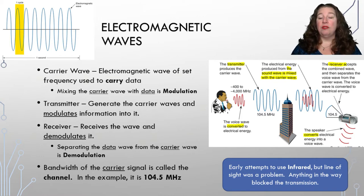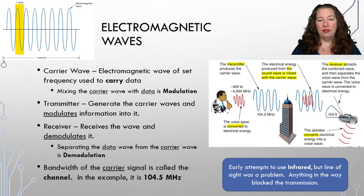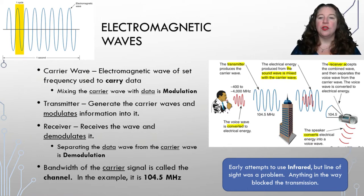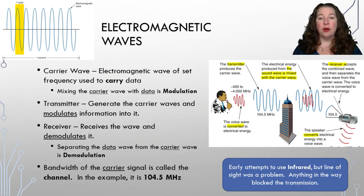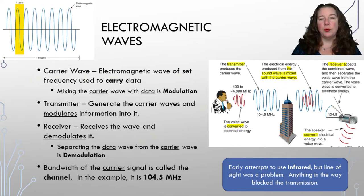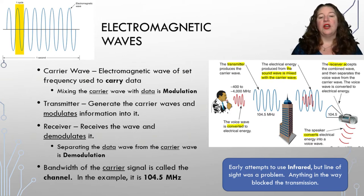Whether it's radio, television, or data, all three essentially use the same concept. We have to have a transmitter and a receiver. The transmitter generates the carrier wave by modulating the information into it, sends it out, and it's received by a receiver. The receiver takes that wave and separates the carrier wave and the data by demodulation. If modulation is the combination of carrier wave and data, demodulation is the separation — we pull the data out and the carrier wave keeps going.